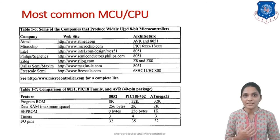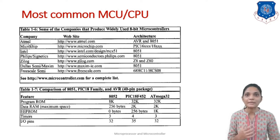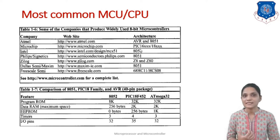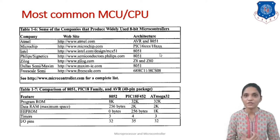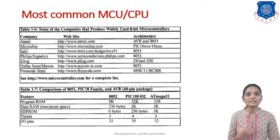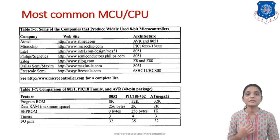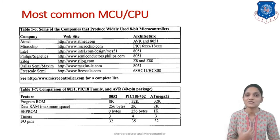This is the list of companies and their products widely used in 8-bit microcontrollers. For Atmel we generally use AVR and the 8051 architecture. From Microchip we use PIC 16 or 18. From Intel we use 8051 architecture, and from Philips also 8051 architecture. These are all 8-bit controllers — you can process 8 bits at a time. You can find their architecture, datasheets, and more on their respective websites.